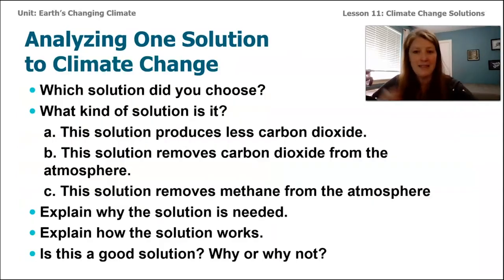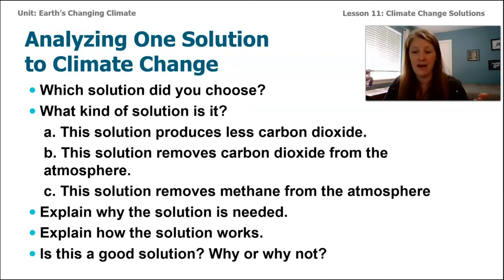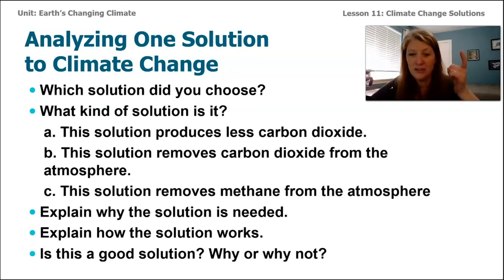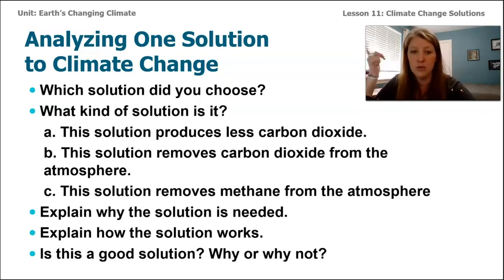In lesson 11, I'd like you to take a look at these questions and, after you've chosen one solution to focus on, answer each of them. You can write your ideas down on paper or talk to a family member or friend. The first question is: which solution did you choose — pick one of the five. The second is: what kind of solution is it? It could be one that produces less carbon dioxide, removes carbon dioxide from the atmosphere, or removes methane from the atmosphere. If you have another solution idea, go ahead and add that to your blog post as well.